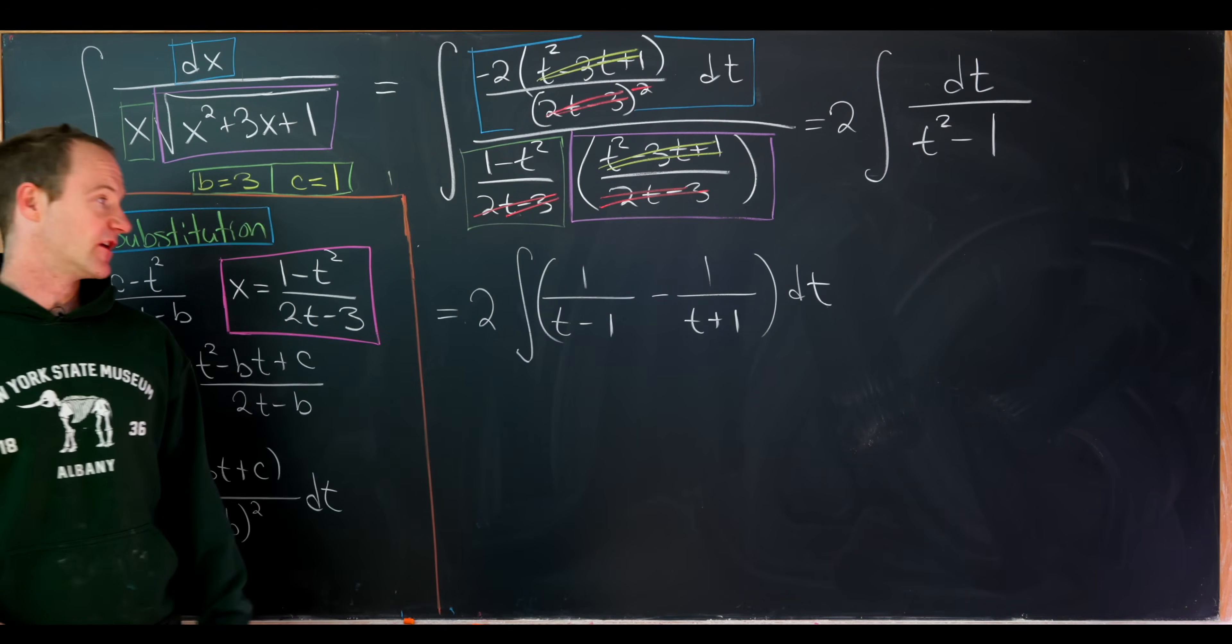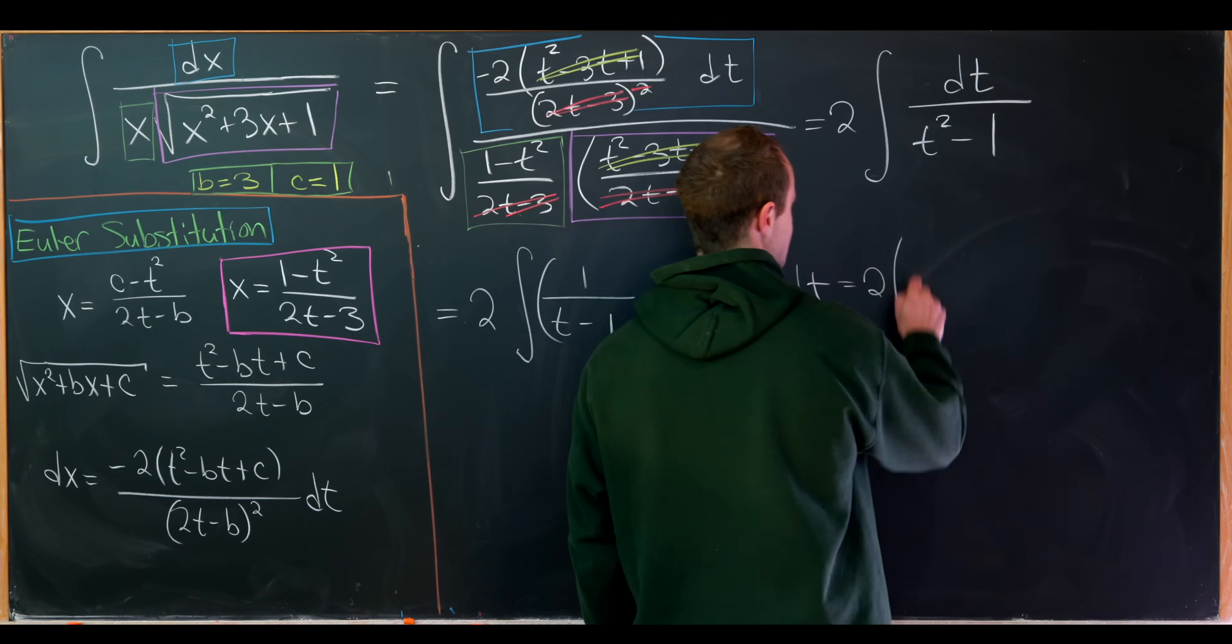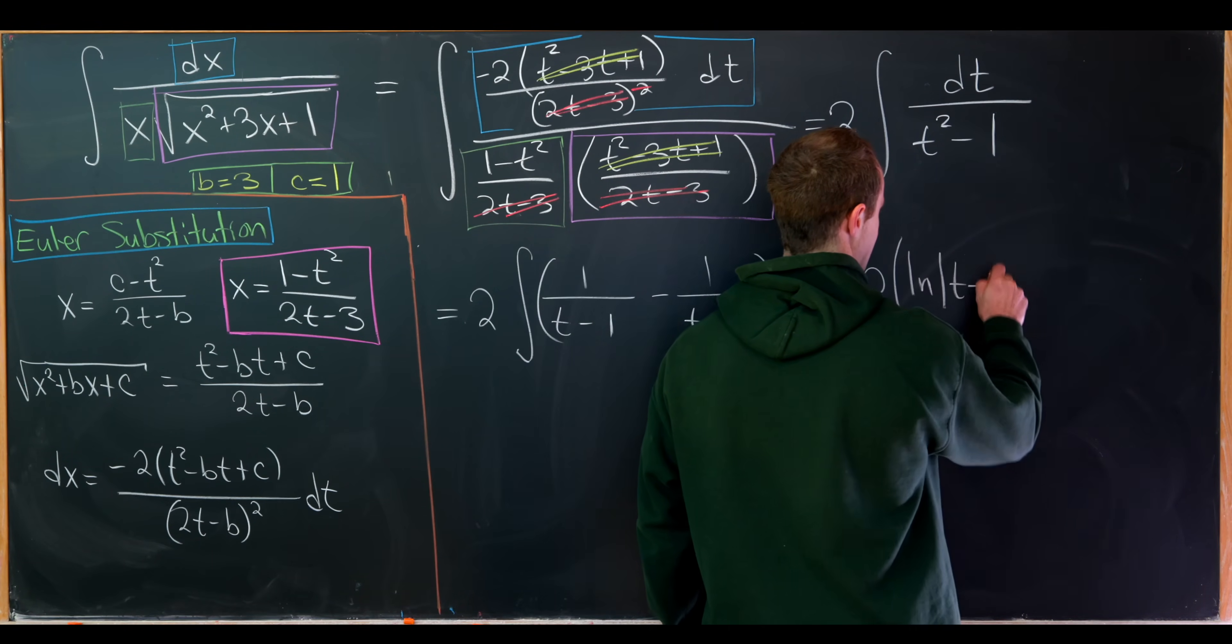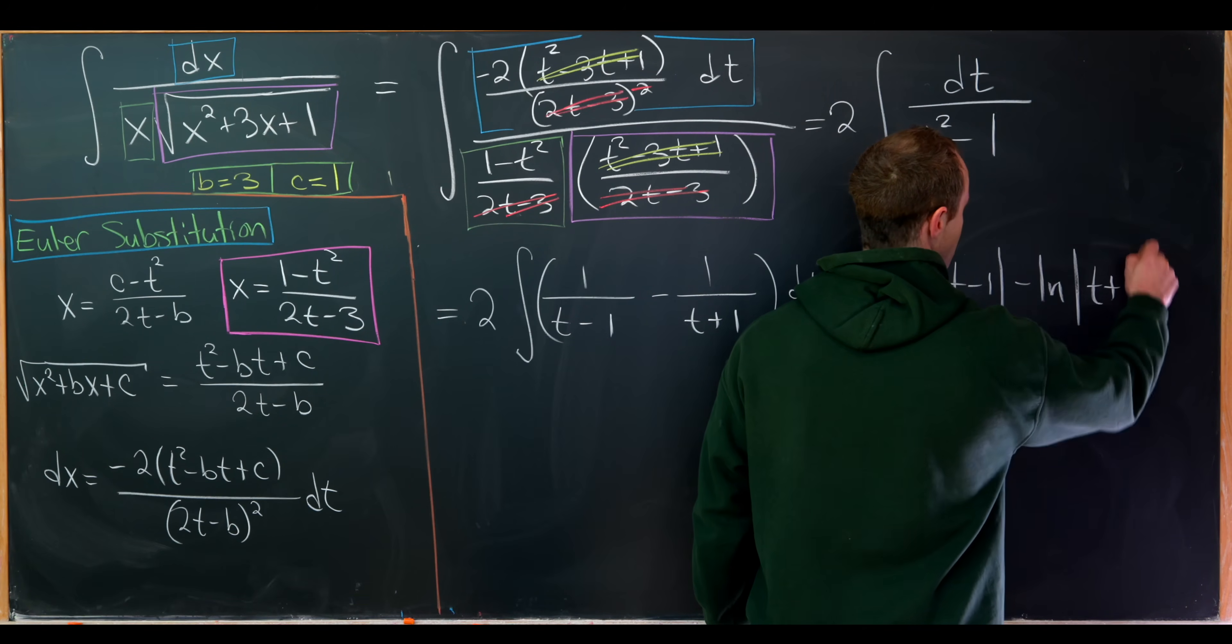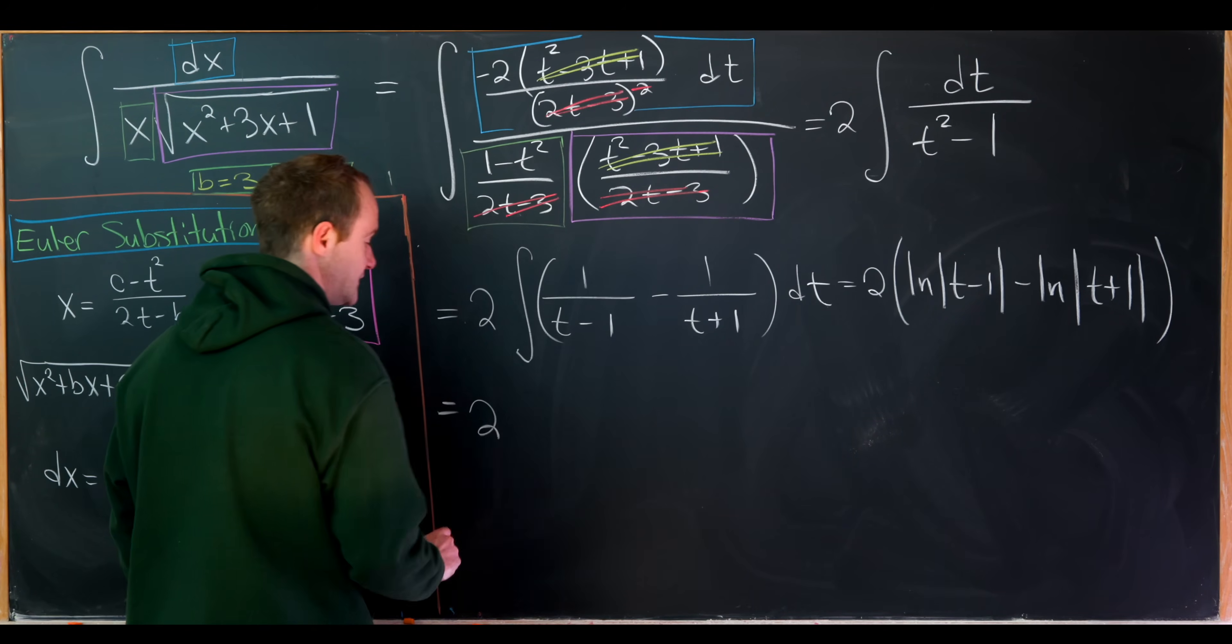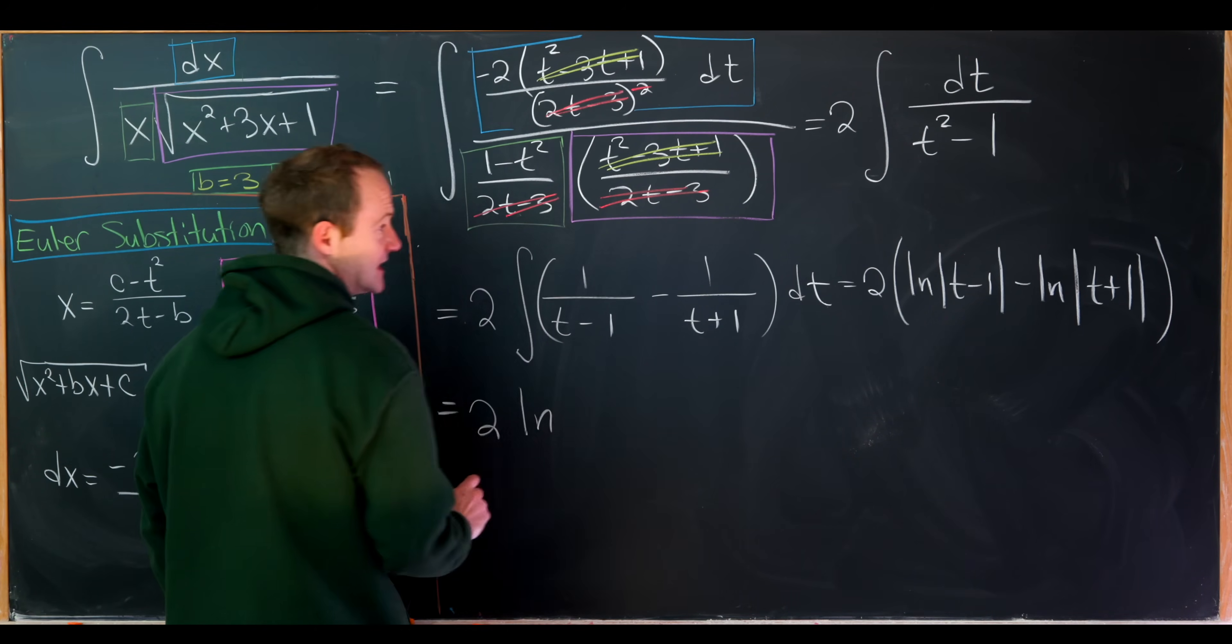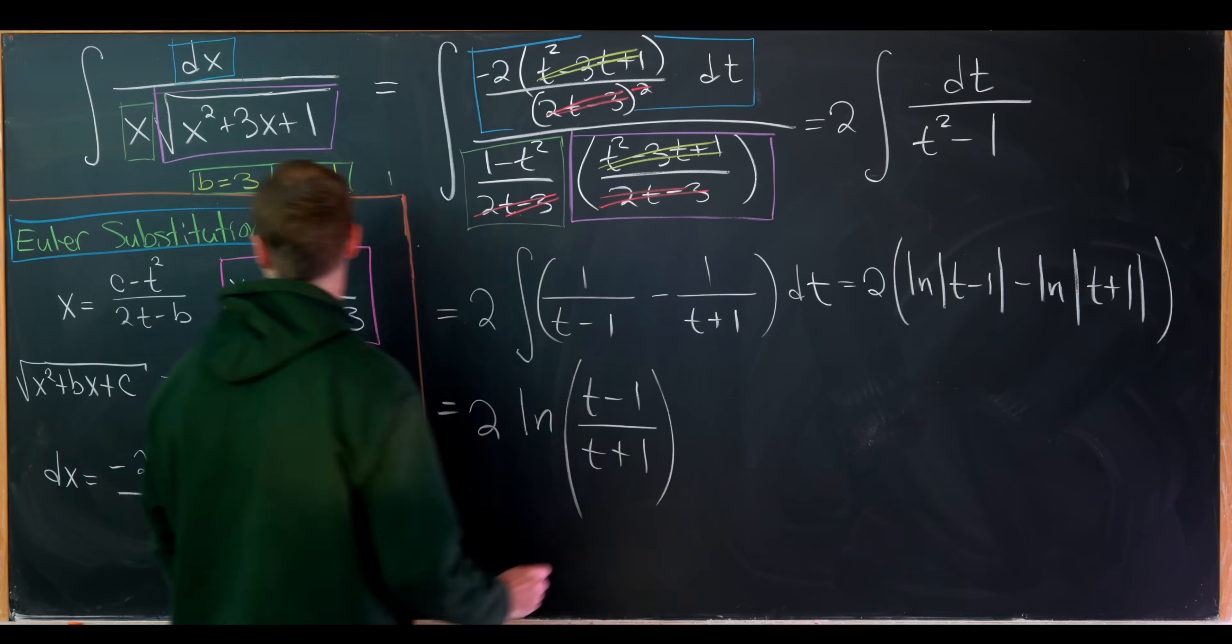But those two have very simple antiderivatives involving natural logs. So we have 2 times the natural log of the absolute value of t minus 1 minus the natural log of the absolute value of t plus 1. So we can put this together and we'll have 2 times the natural log of t minus 1 over t plus 1.